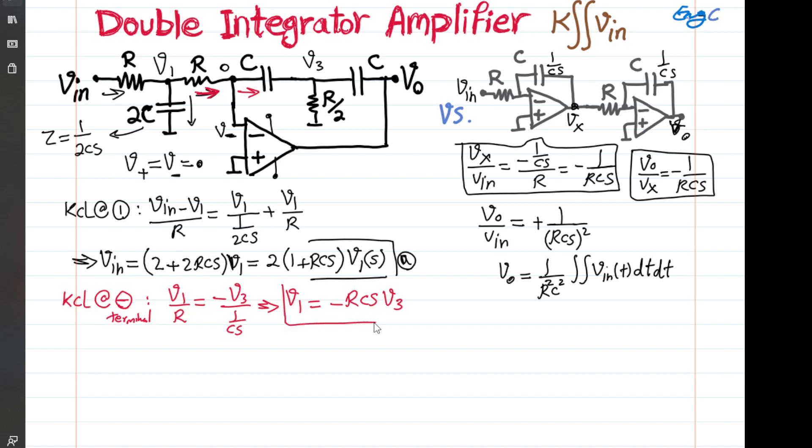Let's name this equation B. I can simply go ahead and in equation A substitute for V1 using the result from B and find basically Vin as a function of V3. Now let's write a KCL at node number three.